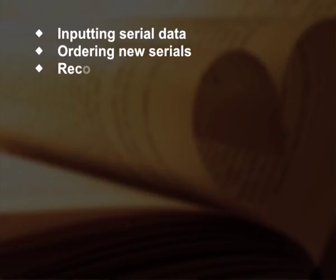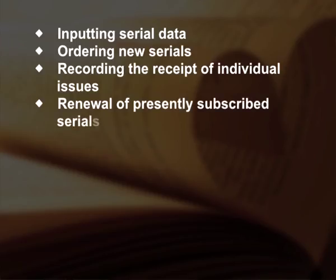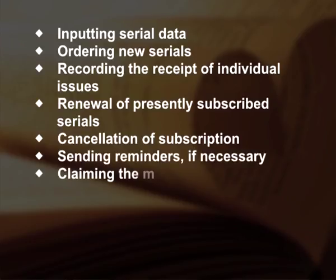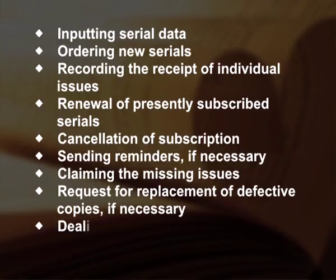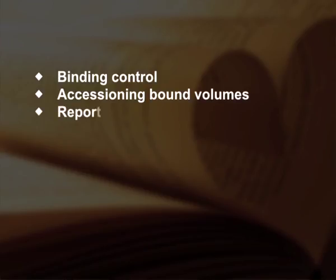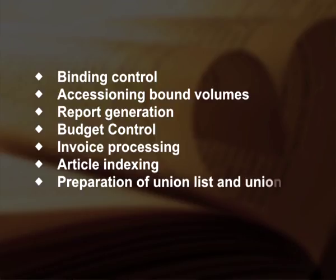To achieve this objective, the system must perform the following functions: inputting serial data; ordering new serials; recording the receipt of issues; requesting replacement of defective copies; dealing with editions, supplements and indexes; binding control; accessioning bound volumes; report generation; budget control; invoice processing; article indexing; and preparation of union catalogs.